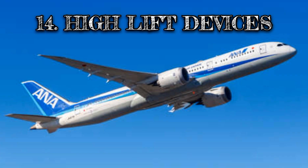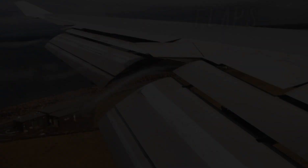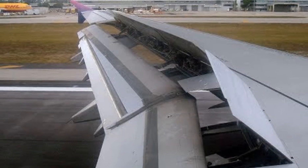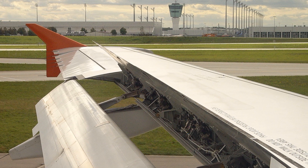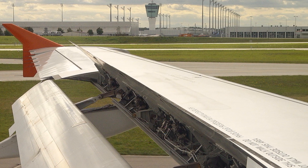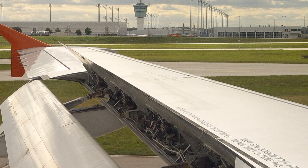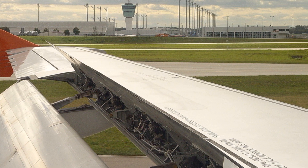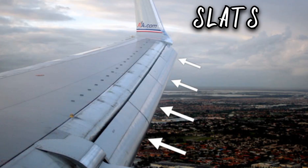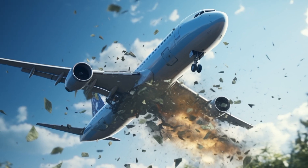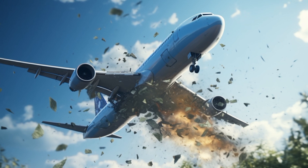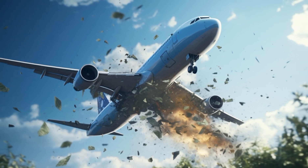High lift devices. Flaps are moveable parts on a wing's rear edge — they increase the wing's surface, generating more lift for takeoffs and landings. Slats, found on a wing's front edge, help smooth the airflow, preventing early stalls.